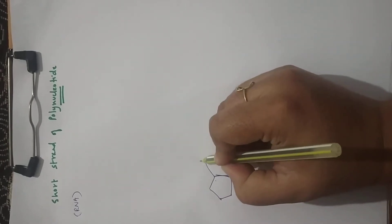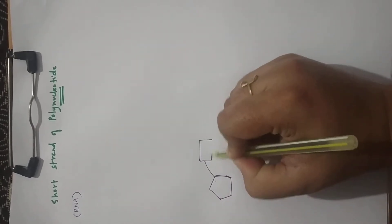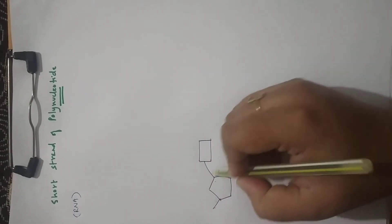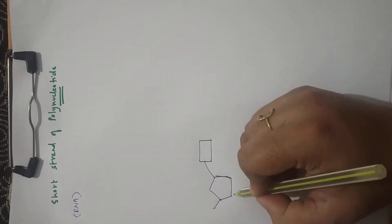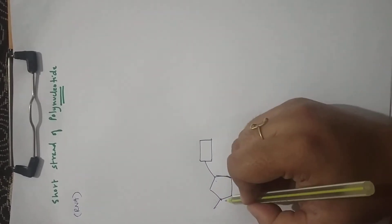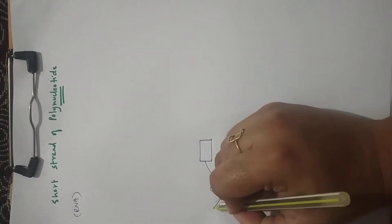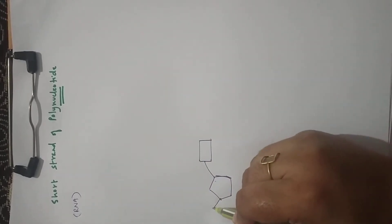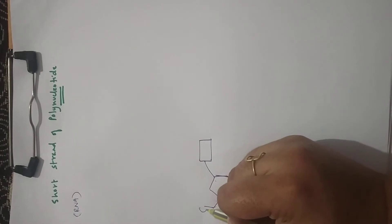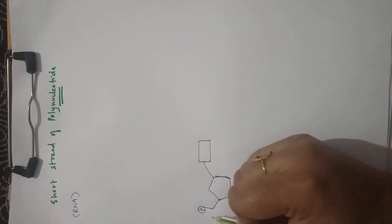Then there will be a nitrogenous base. This is 1, 2, this is the 3' position, 4 and this is the 5th carbon outside the chain. So outside the chain there will be a phosphate attached to the 5th carbon.